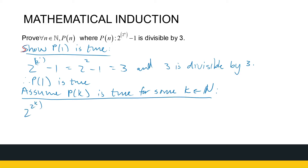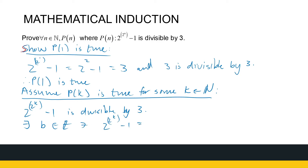So 2 to the power 2^k minus 1 is divisible by 3. What does that mean? That means there exists some integer B such that 2^(2^k) minus 1 equals 3 times B. So that means 2^(2^k) equals 3B plus 1. We might need this later — and we probably will.